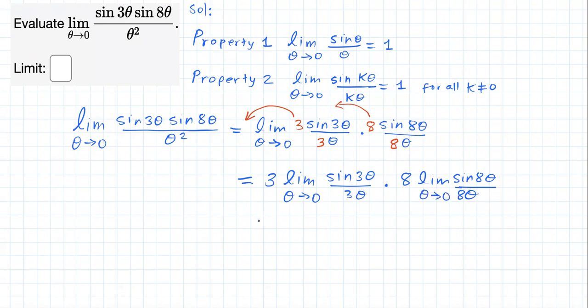But now, this is going to be three. This limit of sine of three theta over three theta as theta approaches zero for k equals three, according to property two, should be just equal to one.